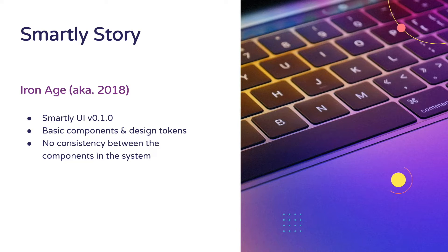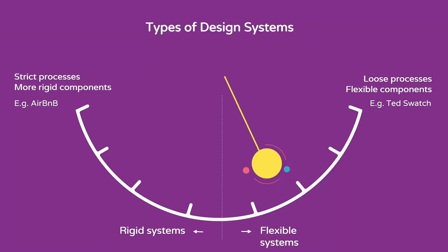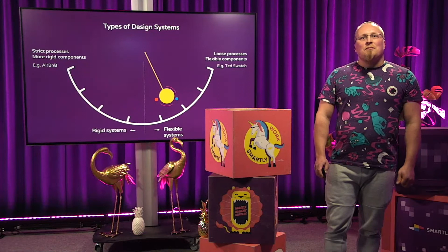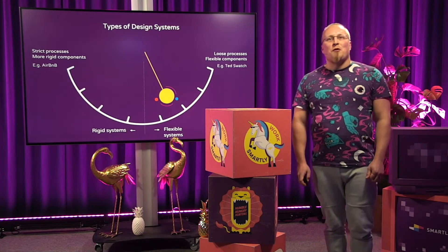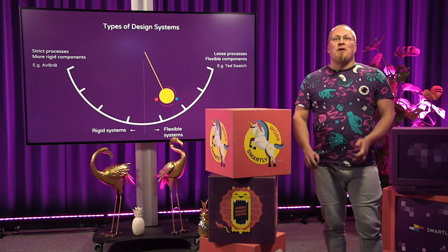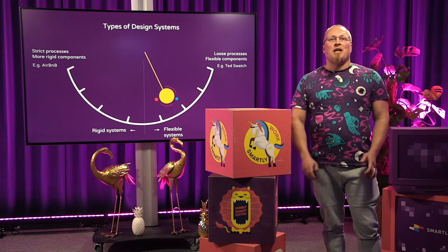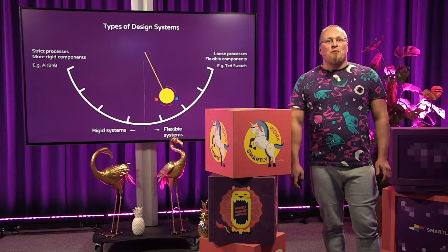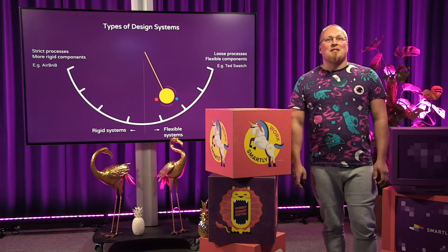There was still no consistency between the components — some were very flexible, while others were quite rigid. However, instead of having components living in their own repos, Smartly UI brought all the components under the same place, making it easier for developers to discover and for designers to keep up to date. So in the end, we landed somewhere with some sort of control — we weren't anymore a fully flexible system, and we saw that it was good on this scale of a product.